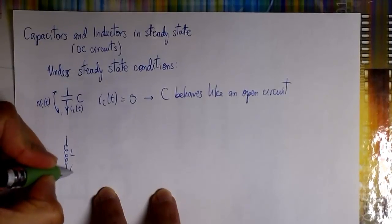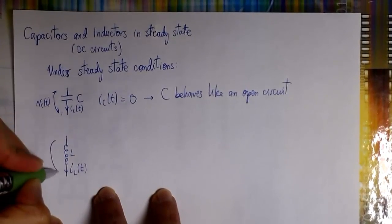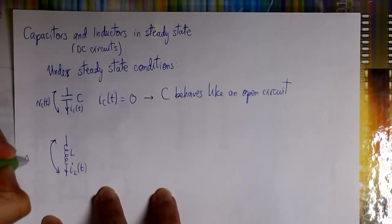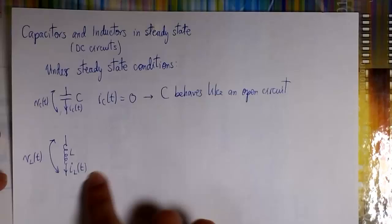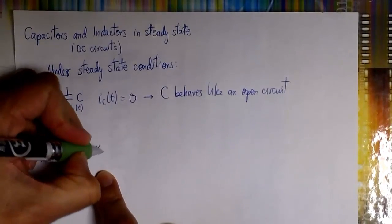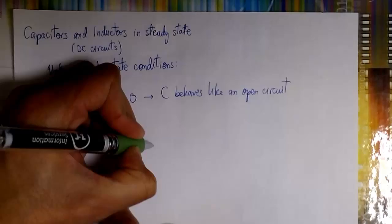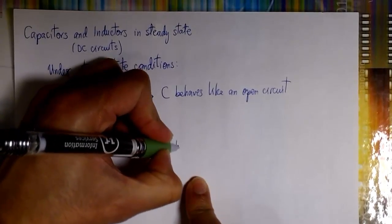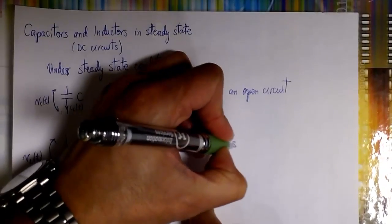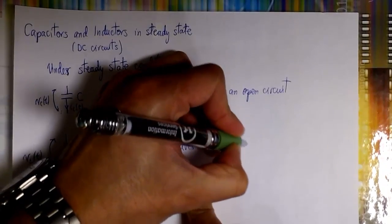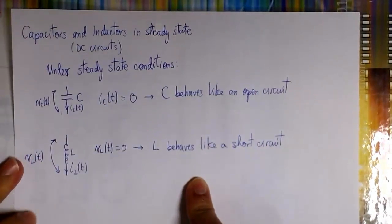In the case of an inductor, we have a current flowing through it and there is a voltage between its terminals. When an inductor is in a steady state, we say that the voltage between its terminals is zero. So the inductor behaves like a short circuit. There will be a current flowing through it but there will not be a voltage between its terminals — it is going to be zero.